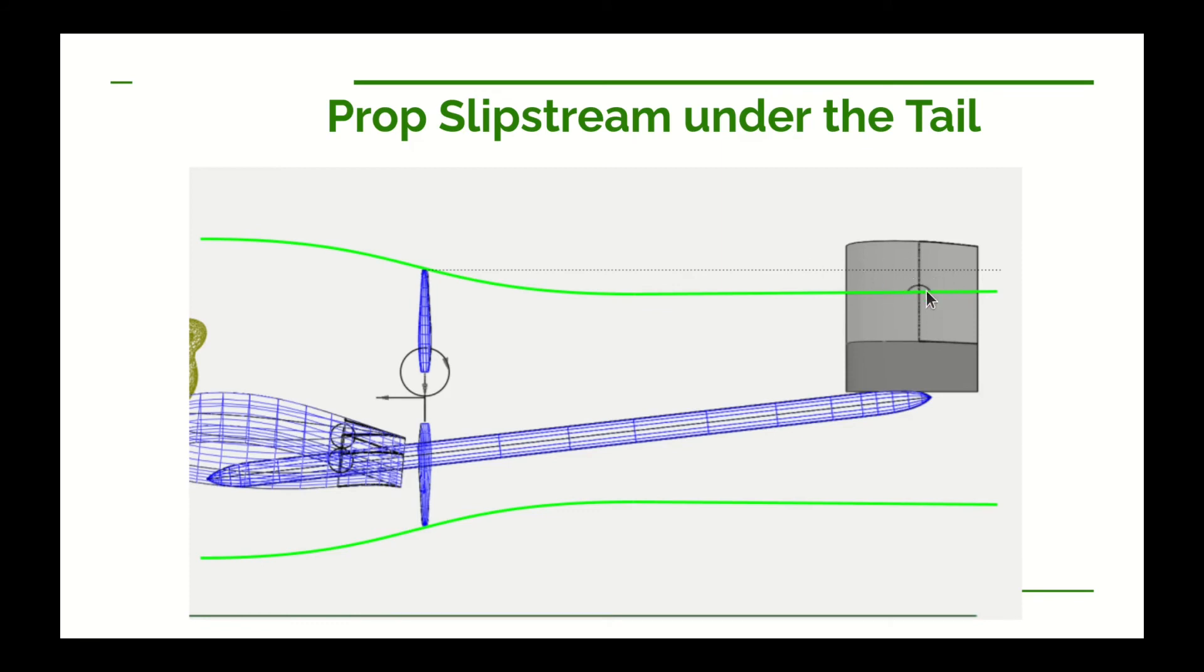Now if we are, what we may end up having to do is raise this motor up just a little bit so we get a little bit of a thrust line above our center of gravity, or we'll have to raise the tail up a little farther and get farther away from the prop wash. But it's just something we need to keep in mind when we get to flight testing.